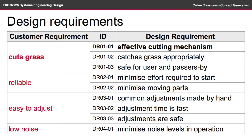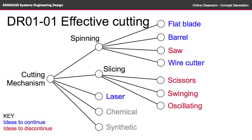At this stage, it might be difficult to see which idea might be best because we haven't fully considered the problem yet. However, it's pretty easy to have a quick look at what ideas might work better than others. If we look at our first design requirement — effective cutting — the flat blade, barrel, and wire cutter might present better options, likewise the laser, though I don't know too much about that at this stage. The saw, scissors, swinging, and oscillating might be a bit more difficult to get an effective cut, mainly because of the difficulties in how I envisage them being applied to the product.